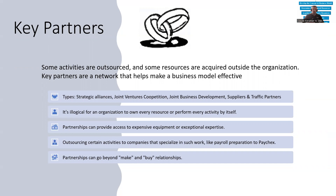Some types of key partners include strategic alliances, joint ventures, co-opetition, joint business development, suppliers, and traffic partners. It's really illogical for an organization to own everything they do when delivering an end-to-end product or service to a customer. Sometimes it's necessary to develop these key partnerships, which can provide access to expensive equipment or exceptional expertise. Thinking about these partnerships is really important, especially at the early stages of a business.